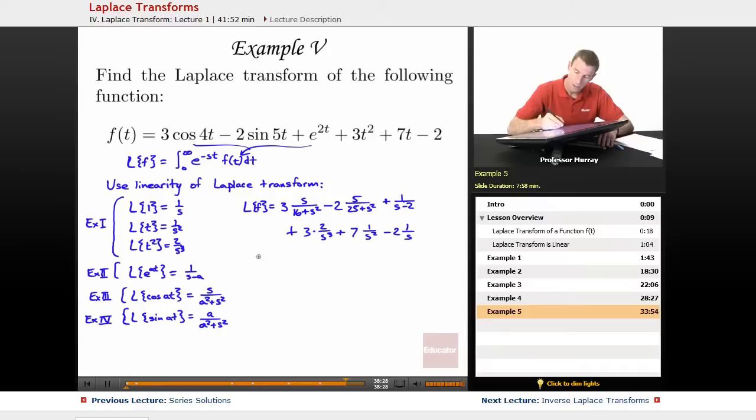So maybe I can clean that up a little bit. That's 3s over s squared plus 16, minus 10 over s squared plus 25, plus 1 over s minus 2, plus 6 over s cubed, plus 7 over s squared, minus 2 over s.